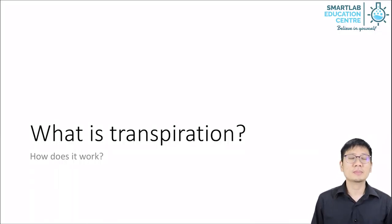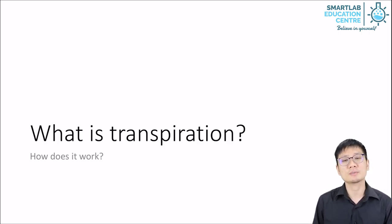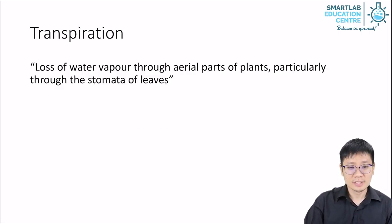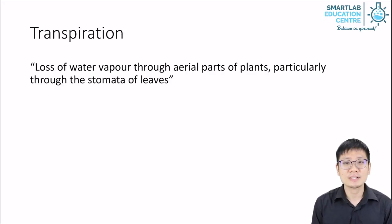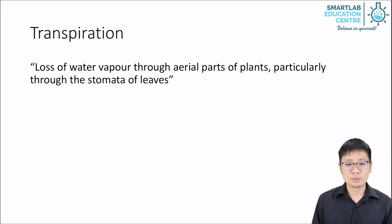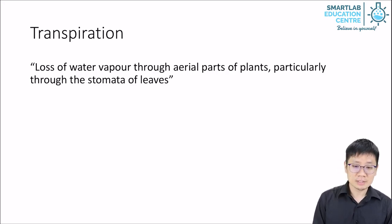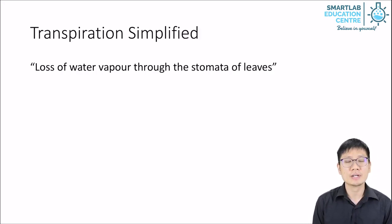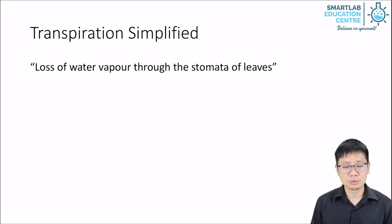This is on Plant Transport Transpiration. What is transpiration? How does it work? Transpiration can be defined as the loss of water vapour through aerial parts of a plant, particularly through the stomata of leaves. That is the more accurate description. Most people use a shorter, simplified version: loss of water vapour through the stomata of leaves.